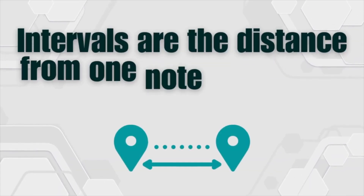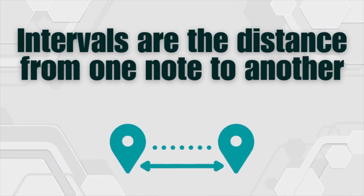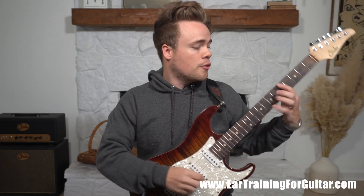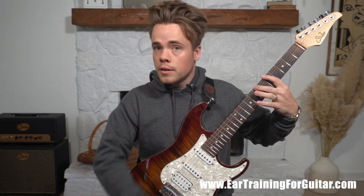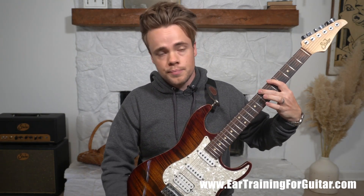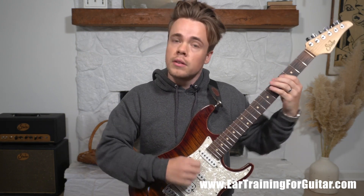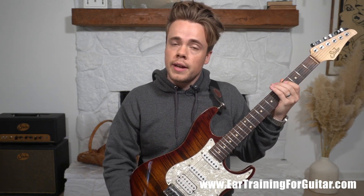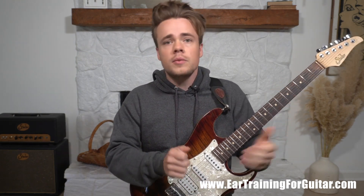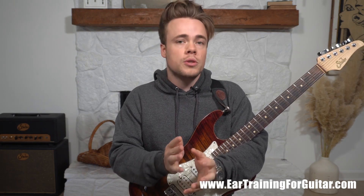An interval is the distance from one note to another. This is what you train your ear on to be able to identify — this and scale degrees. So if I go from here to here, that's a second interval — it's two frets away. If I go here to here, that is a third interval — two whole steps away or four frets away. And it goes on and on. So intervals are just the distance from one note to another.